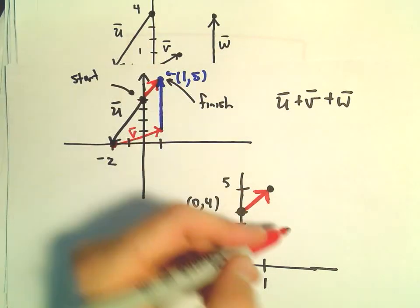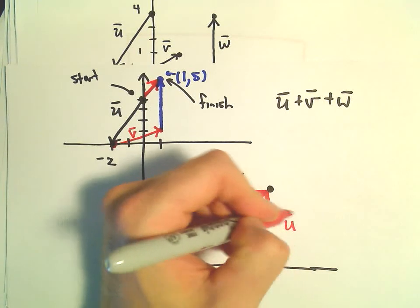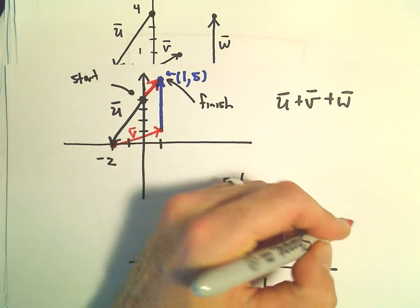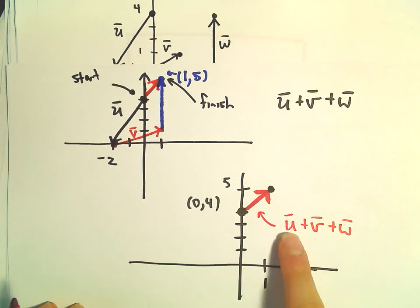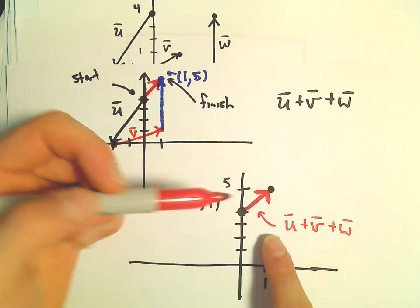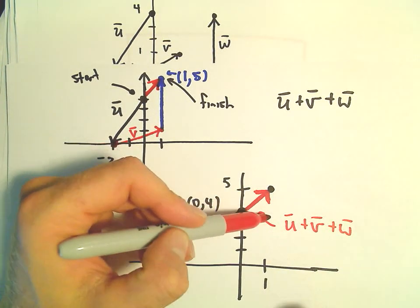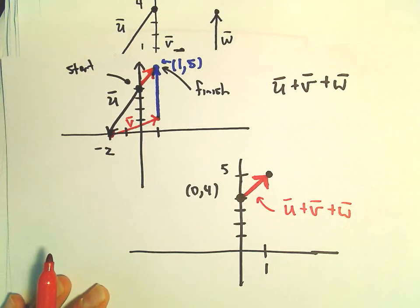And that is going to be our vector u plus v plus w. Okay, so the vector u plus v plus w would basically just be a little vector that goes one unit to the right and one unit upwards.